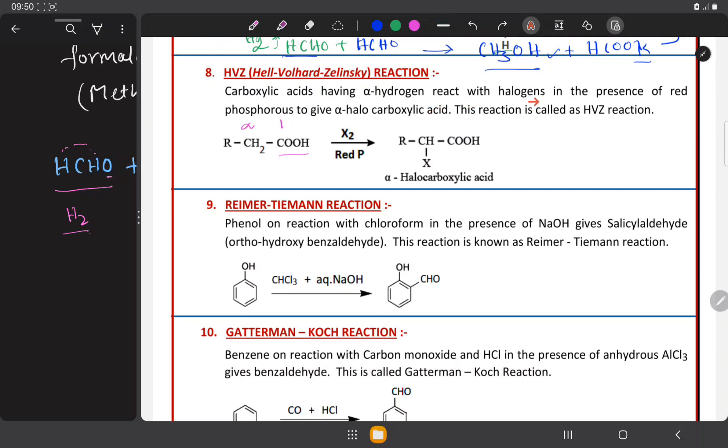Now, it reacts with halogens. We know what are halogens. In the previous video, we have discussed halogens are nothing but 17 group elements like fluorine, chlorine, bromine, iodine. So, it reacts with halogen. Here, one of the alpha hydrogens is substituted by halogen atom.